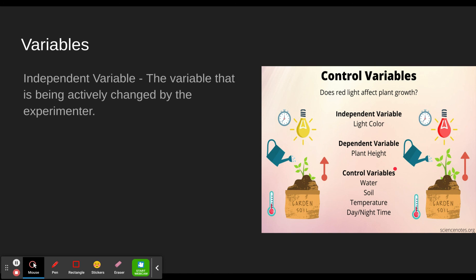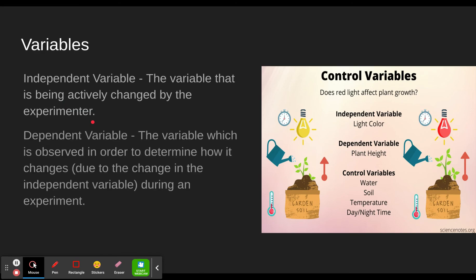Independent variable. The independent variable is the variable that is being actively changed by the experimenter. So in our last one, the independent variable would have been how salty the water was, the salinity of the water. Dependent variable. The variable which is observed in order to determine how it changes due to the change in the independent variable during the experiment.